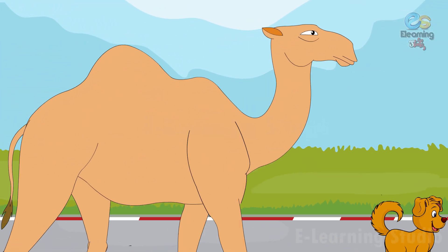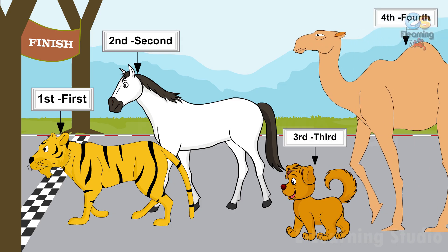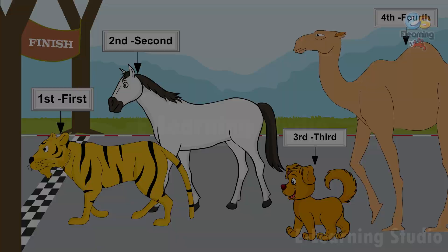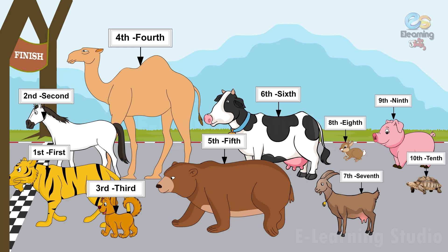The dog and camel running quite fast and got third dog and fourth camel position. Bear is on fifth position. Cow is on sixth position. Goat is on seventh position. Rabbit is on eighth position. Pig is on ninth position and the tortoise is on the tenth position. With these positions, the race end.